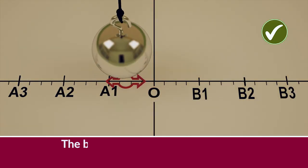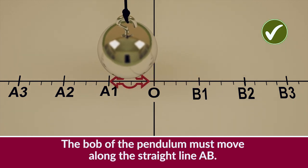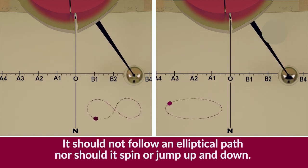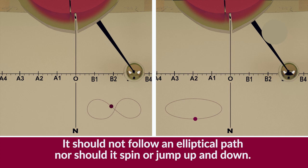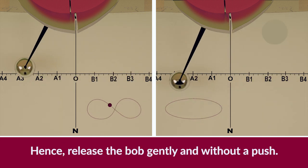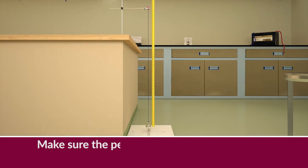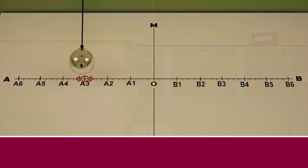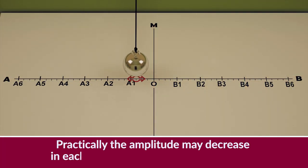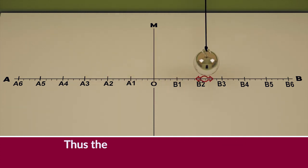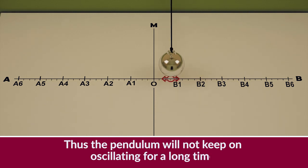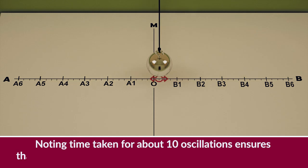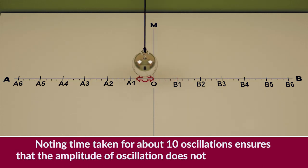Precautions: The bob of the pendulum must move along the straight line AB. It should not follow an elliptical path, nor should it spin or jump up and down — hence, release the bob gently and without a push. Make sure the pendulum moves freely without touching the edge of the table or surface below. Since amplitude may decrease with each swing, noting the time for about 10 oscillations ensures the amplitude does not become too small.